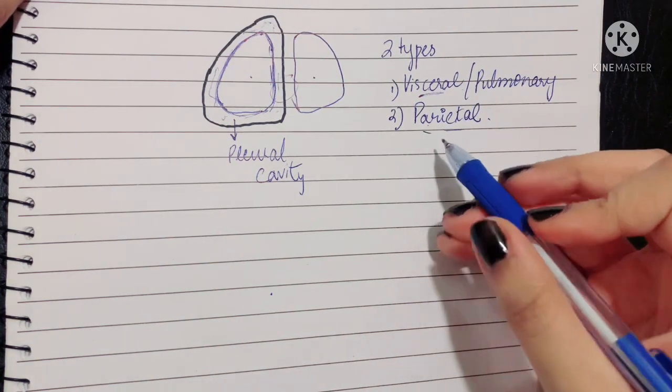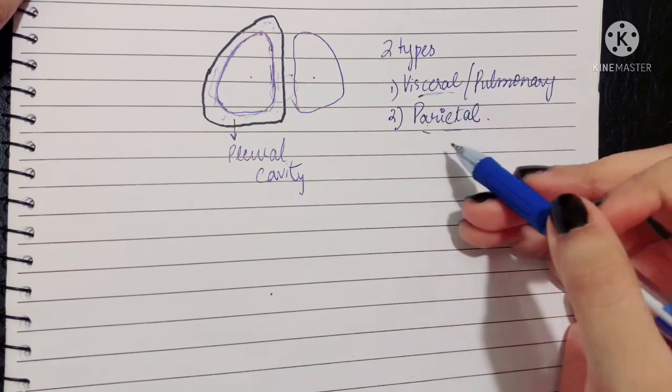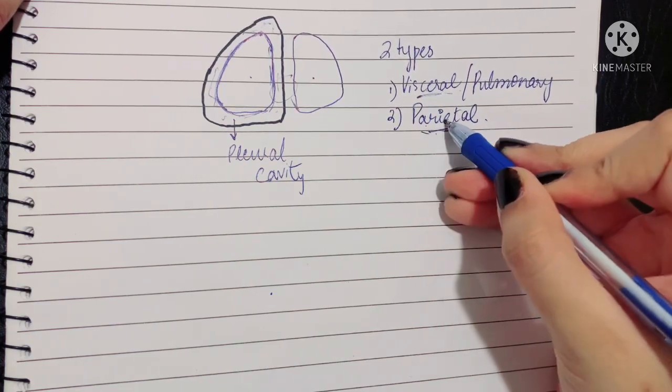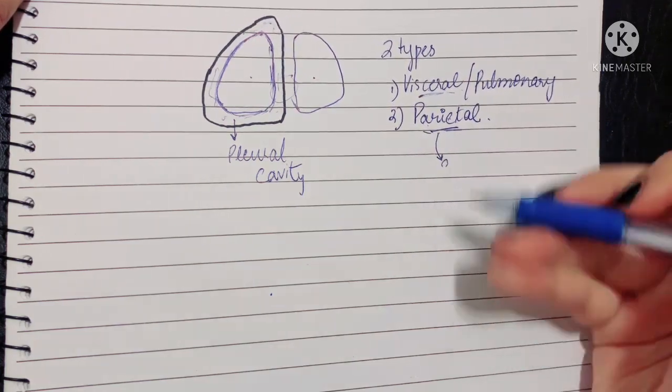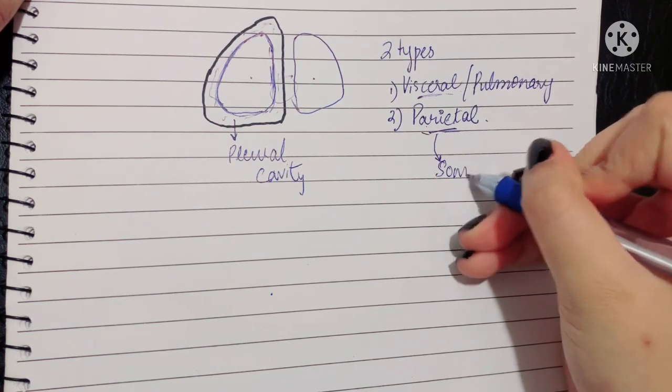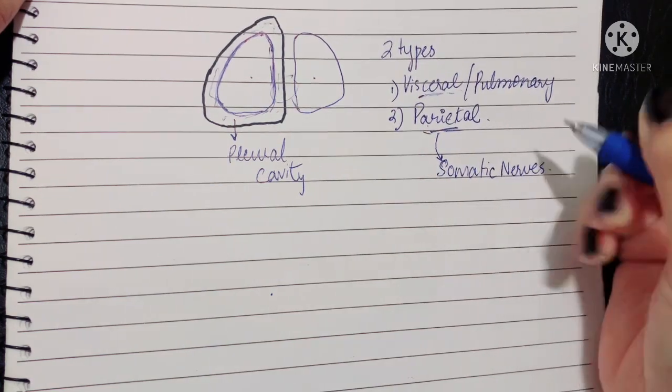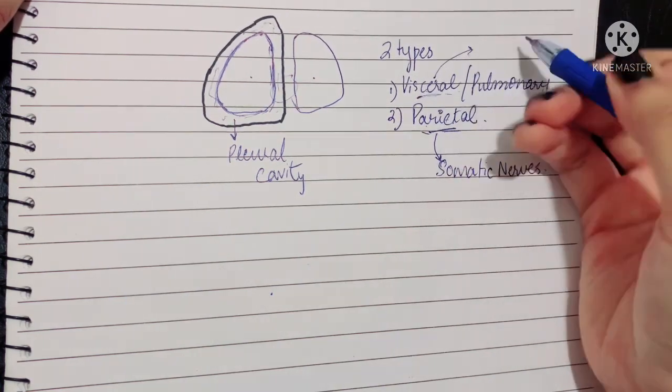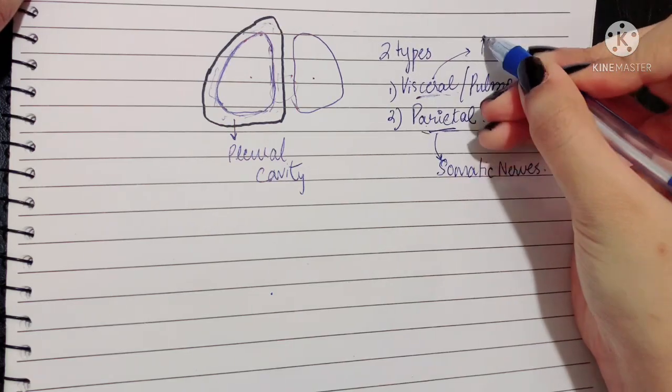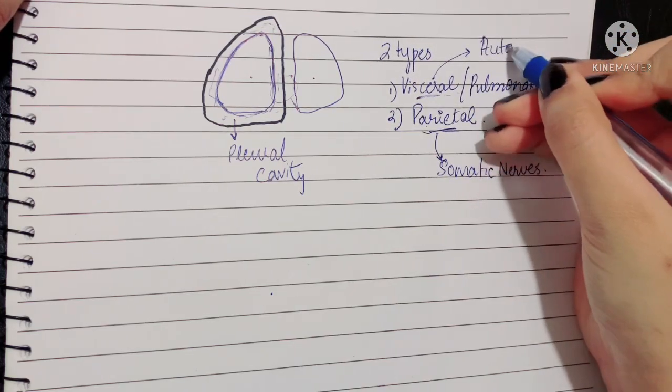The major significance of knowing their development is that since this is developed from the somatopleuric layer, it is supplied by the somatic nerves. On the other hand, since this is coming from your splanchnopleuric layer, it is innervated by the autonomic nerves.